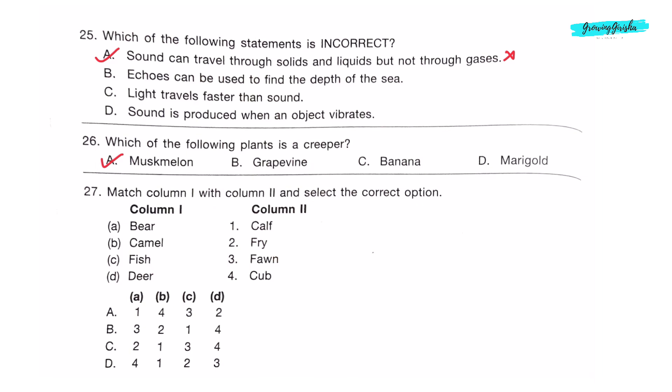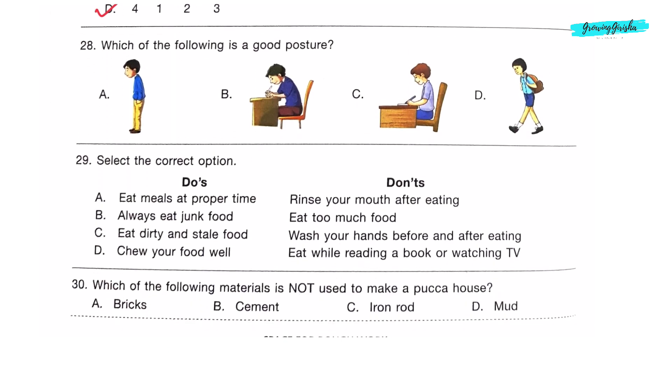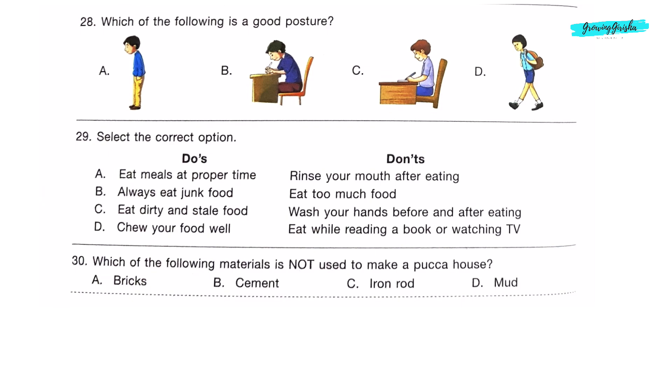Question 27: Match column 1 with column 2 and select the correct option. Baby of bear is called cub, baby of camel is called calf, baby of fish is called fry, and baby of deer is called fawn. So option D is the correct answer. Question 28: Which of the following is a good posture? We should always keep our back straight while sitting and walking. Option C.